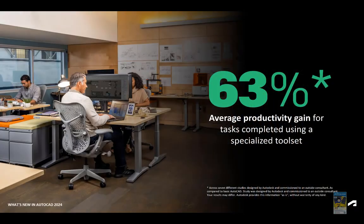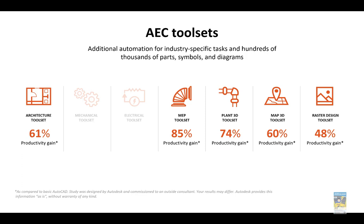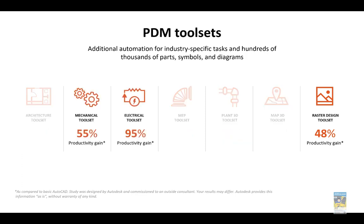When we look at AutoCAD vertical products and how the different products will help you become more efficient, the average productivity gain across the board is 63% for use with those specialized toolsets. For the AEC toolsets — AutoCAD Architecture, AutoCAD MEP, Plant 3D, Map 3D, and Raster Design — they all hit at least 48% or higher. For the product design and manufacturing toolsets for Mechanical, Electrical, and Raster Design, we also see at least a 48% productivity gain.